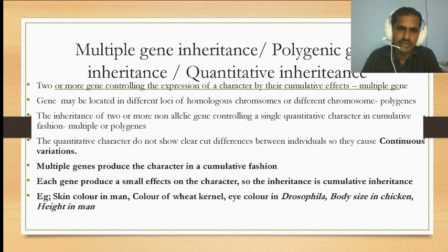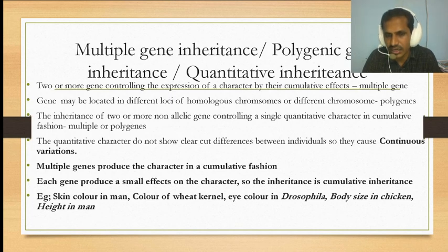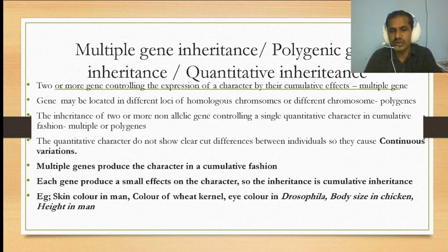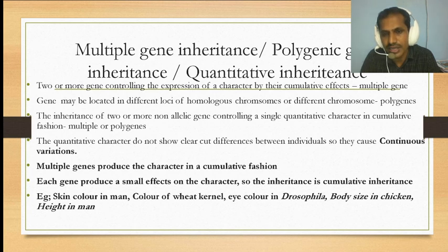The quantitative character does not show clear-cut differences between individuals, so they cause continuous variations. Multiple genes produce characters in a cumulative fashion, and each gene produces a small effect on the character. Examples include skin color in humans, color of wheat kernel, eye color in Drosophila, body size in chicken, and height in humans.